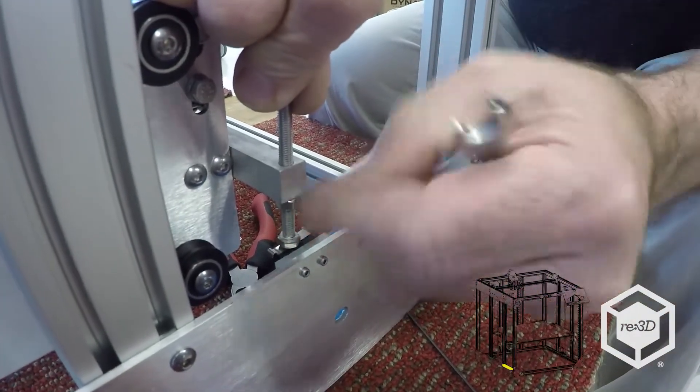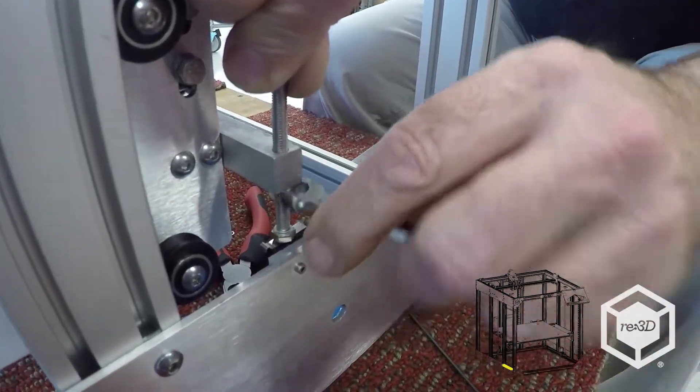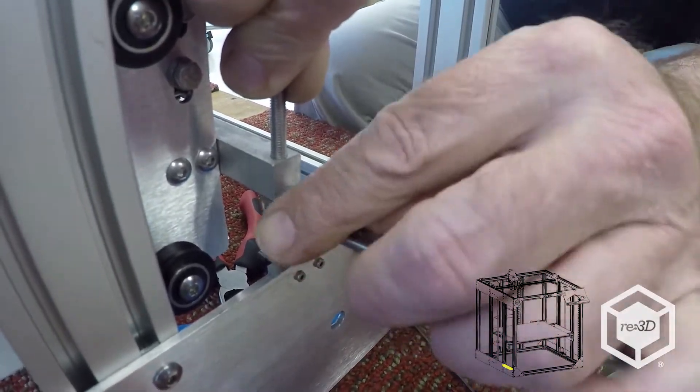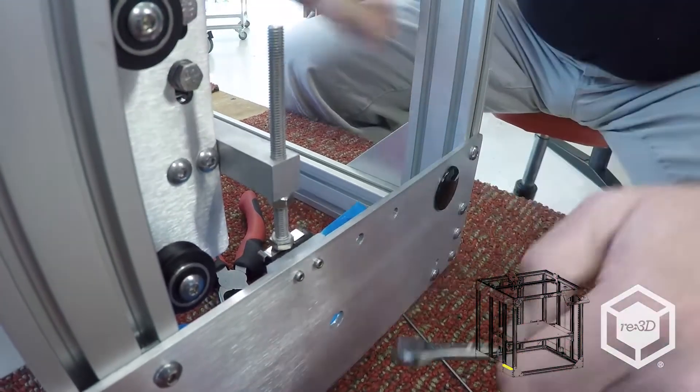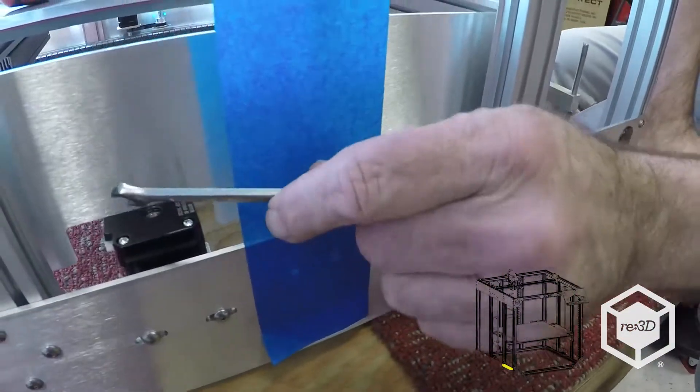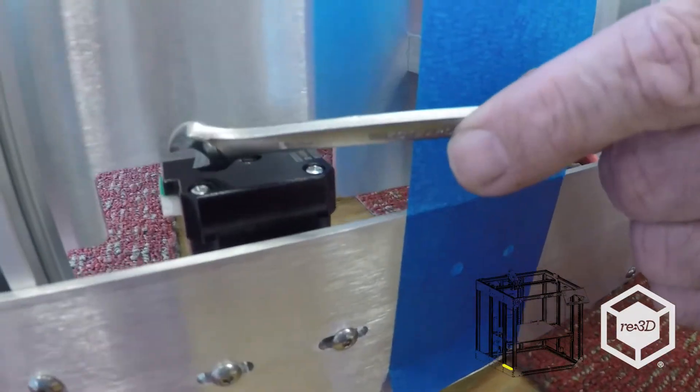And then what you'll do is when you cycle the bed, you'll go all the way up and then as you're coming down, stop. And then you want to reset the limit switch when you've got two millimeters of clearance between the bed plate and the Z motor.